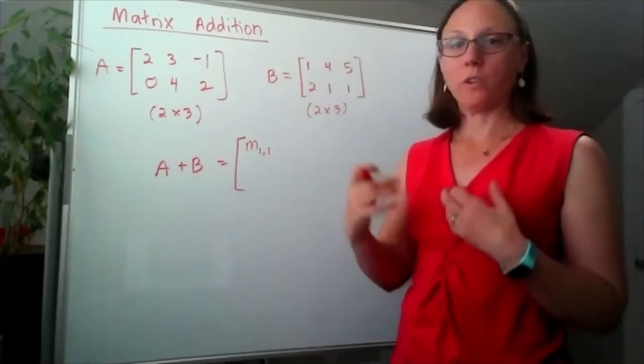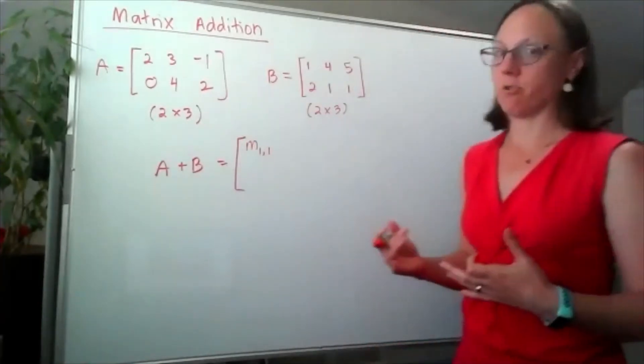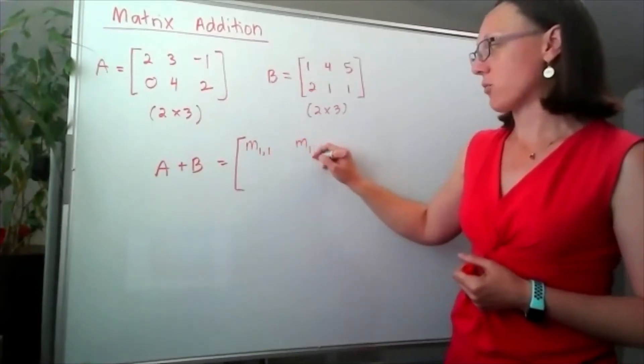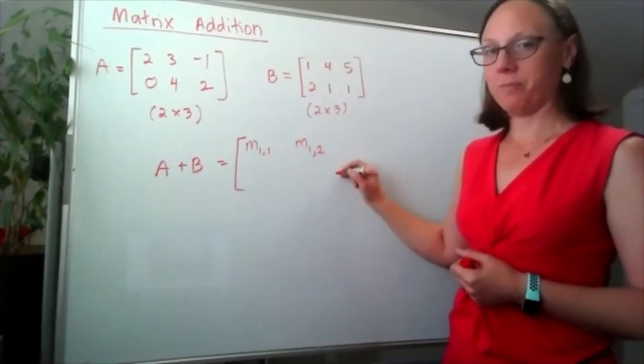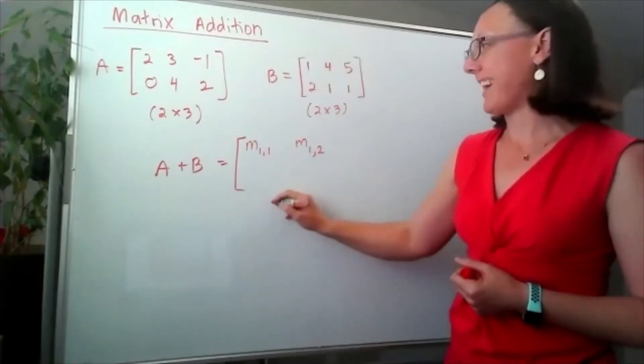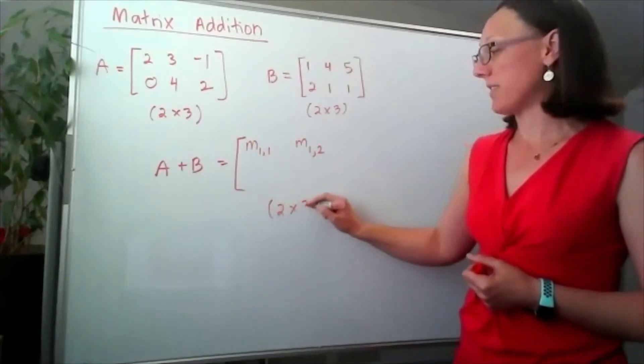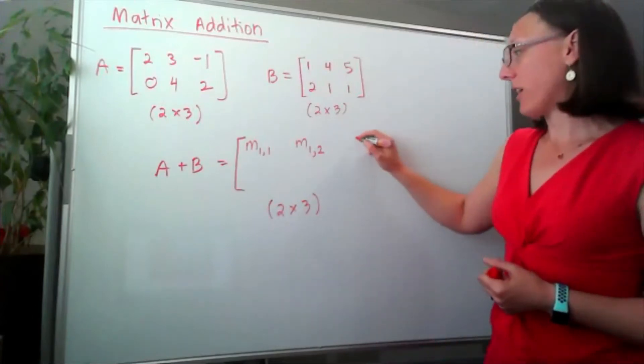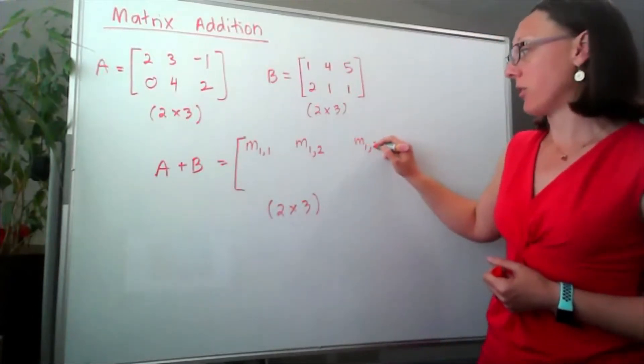Again, we're always rows before columns whenever we're talking about matrices. This spot here is the first row, second column. Remember, because I'm doing addition, I need to end up with the same dimensions, so it's got to be a 2 by 3. So this entry would be the first row, third column.